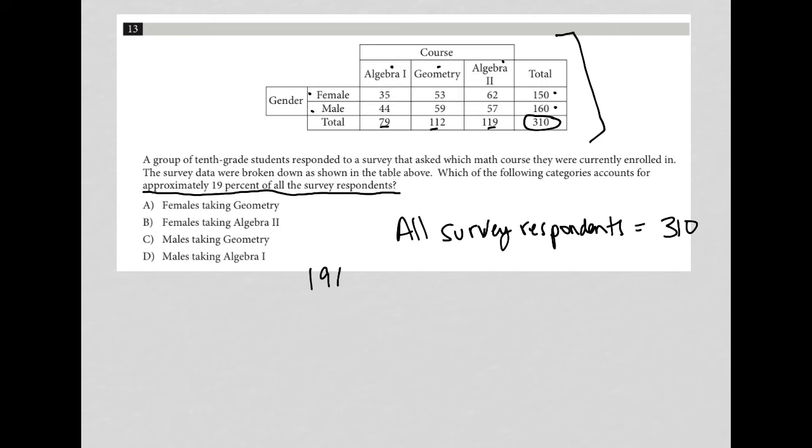So 19% of this translates mathematically to 0.19. Anytime we use percentages on this test, we're going to turn it into a decimal. Of means multiply, and then 310.